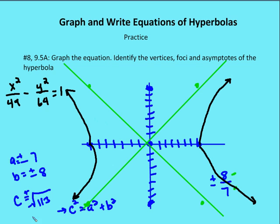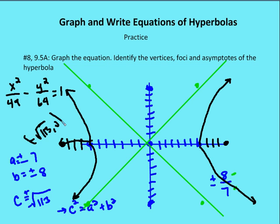Now finally, I need to graph my foci. The square root of 113 is about 10 and a half. So I'm going to mark off 7, 8, 9, 10 — here's one of my foci — and 7, 8, 9, 10 — here's my other focus. I'm going to label these two: this is going to be negative square root of 113, zero, and this is going to be positive square root of 113, zero.